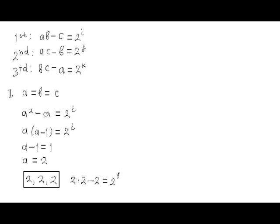Let's start our analysis with a case when all three numbers A, B, and C are equal. So instead of three requirements, we have just one requirement for the triple AAA, and that can be written as A squared minus A equals some power of 2. This can be factored as A times A minus 1 equals the same power of 2, and since one of two positive integer numbers A and A minus 1 must be odd, A minus 1 must be equal to 1, because 1 is the only odd power of 2. That forces A to be equal to 2. So there is only one triple of this type, when all three numbers are equal, is 2, 2, 2.